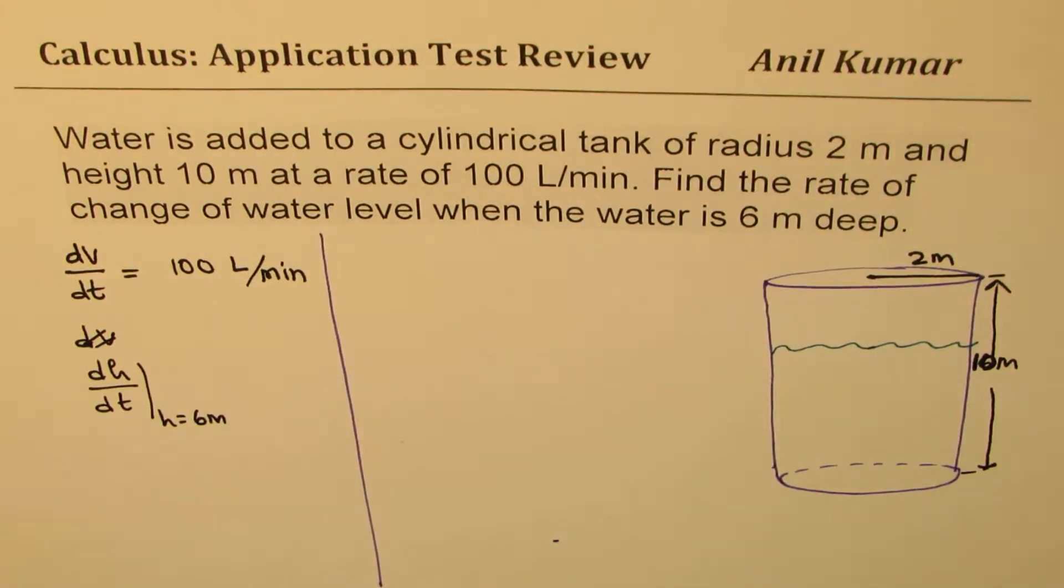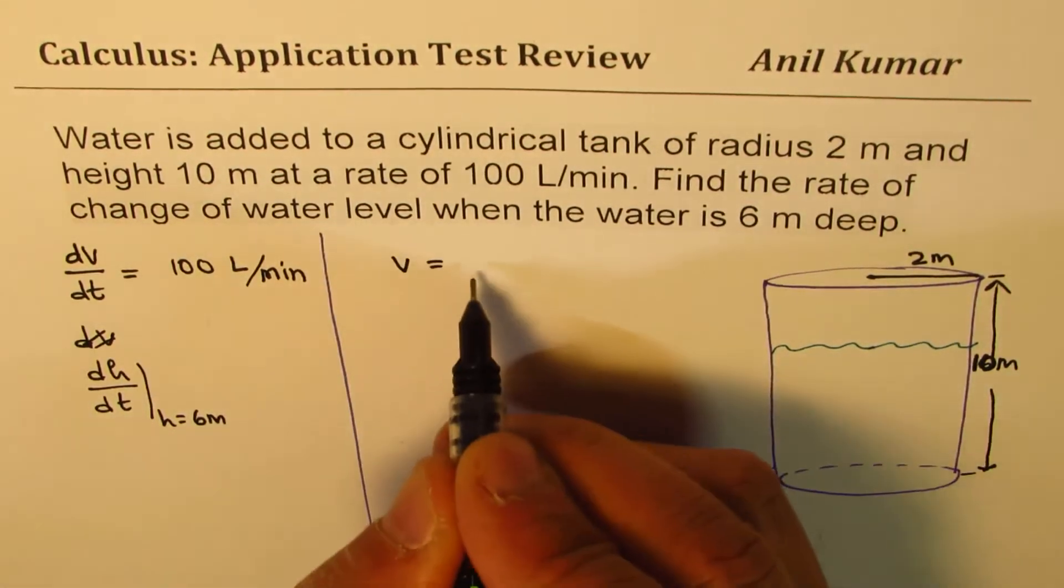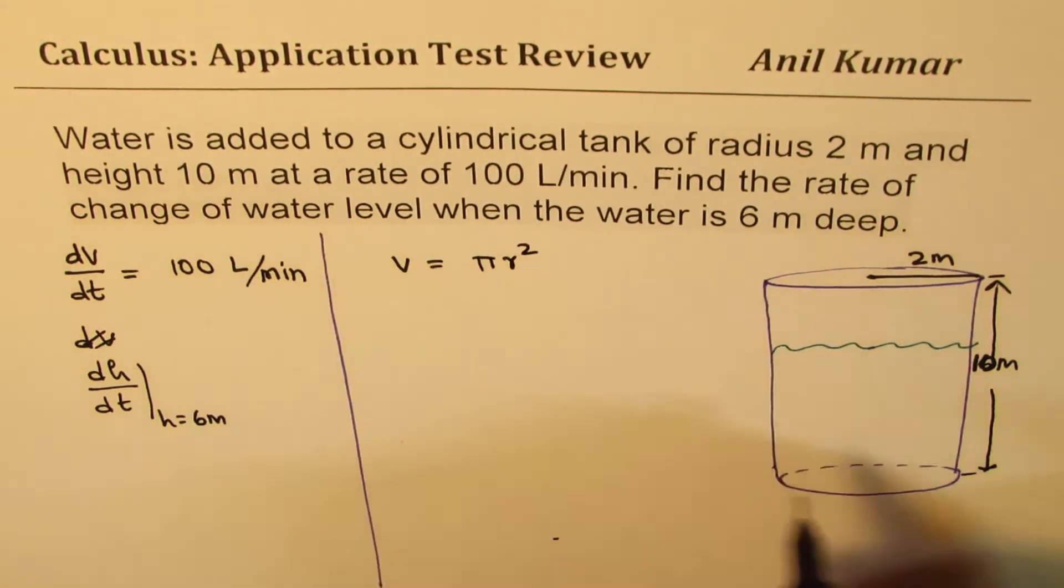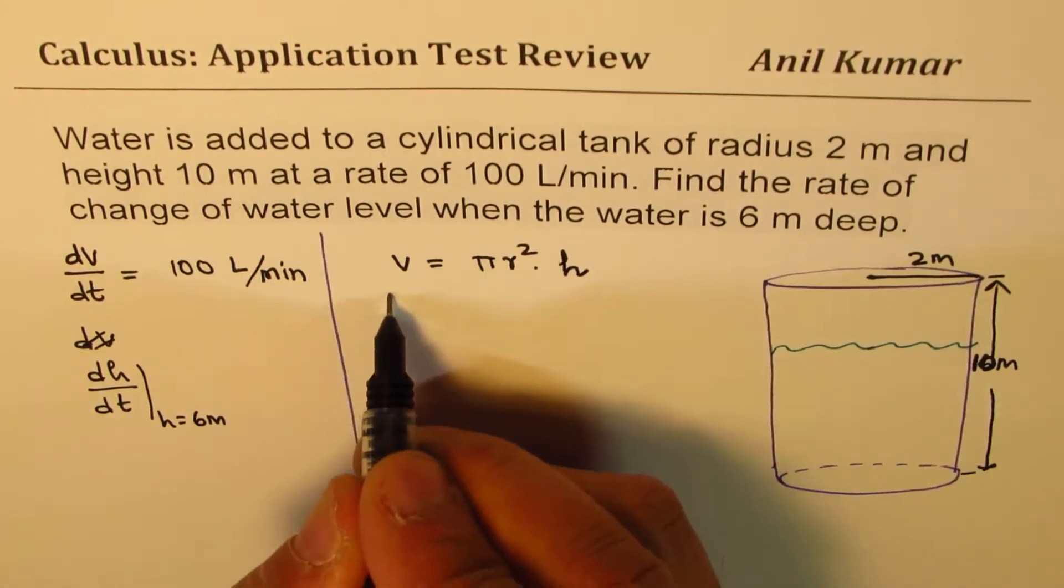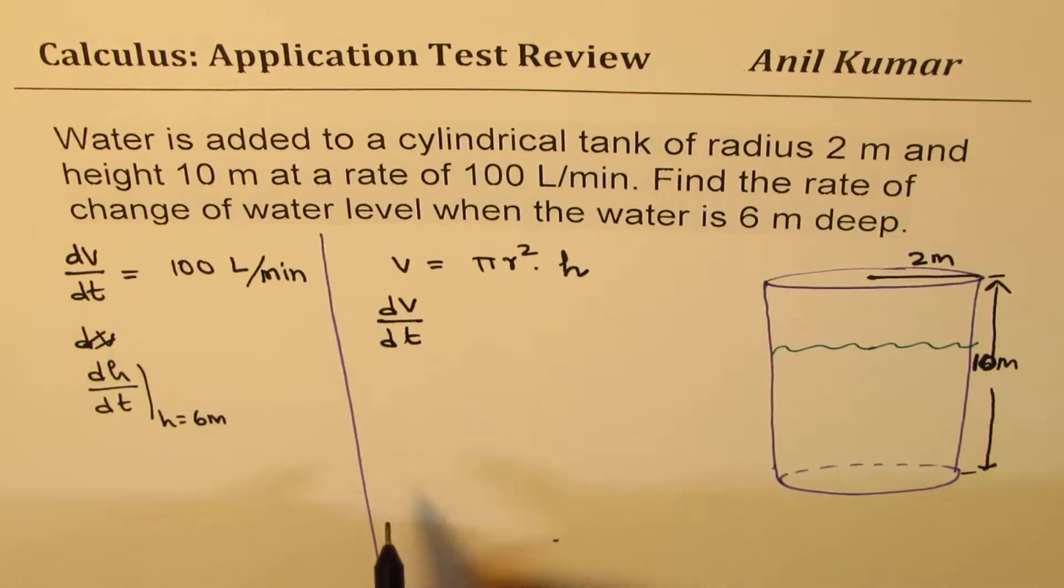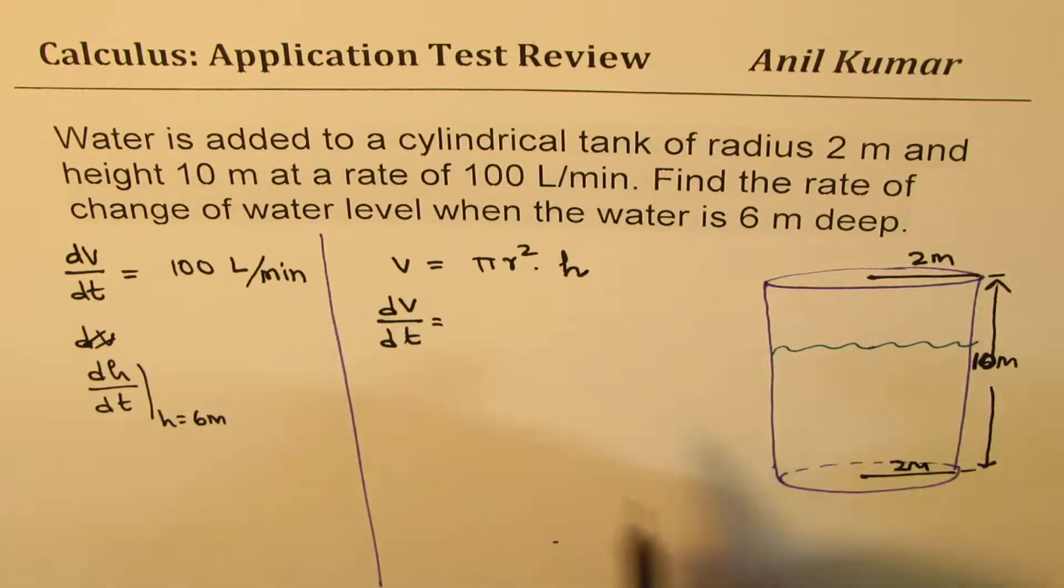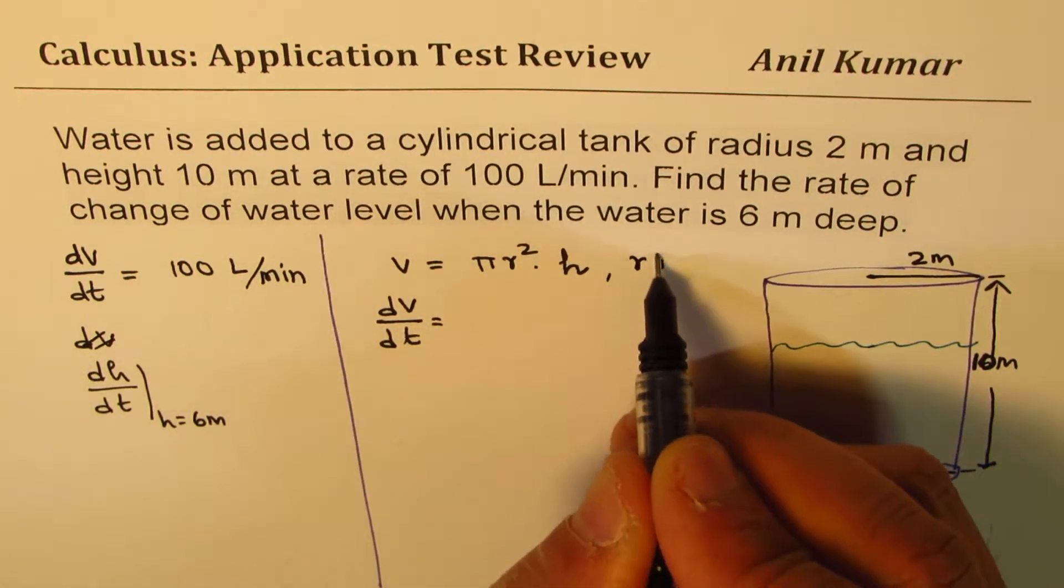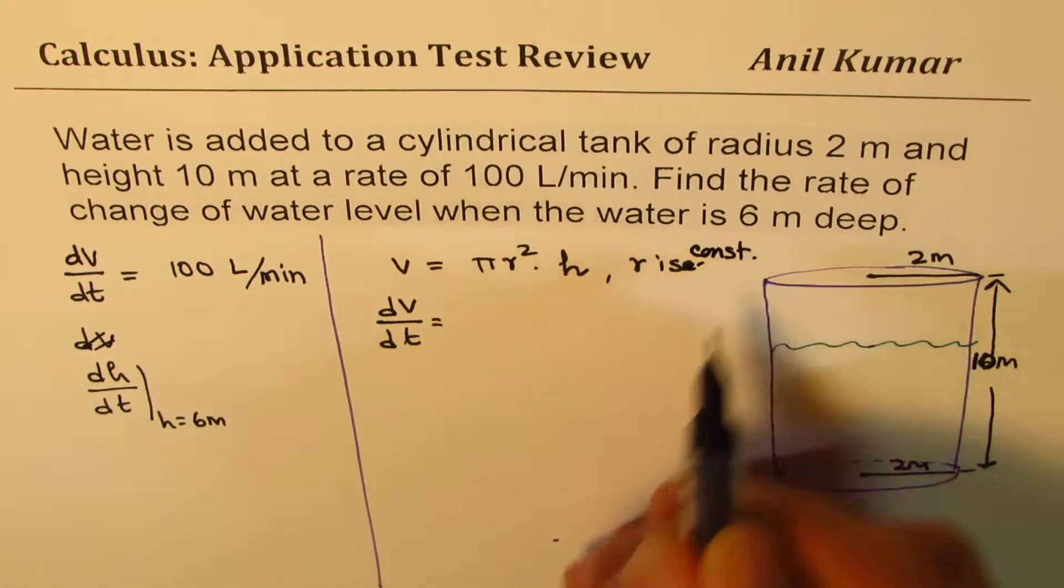Well, this is a seemingly straightforward question. We know volume for a cylinder is pi r square, which is the area of the base, times height. So what is rate of change of volume equal to? Now, remember one thing. As you can see, the radius is constant. It is 2 meters. So we know r is constant.